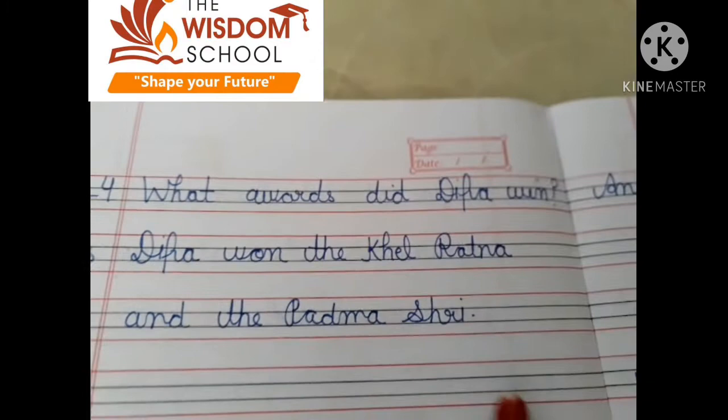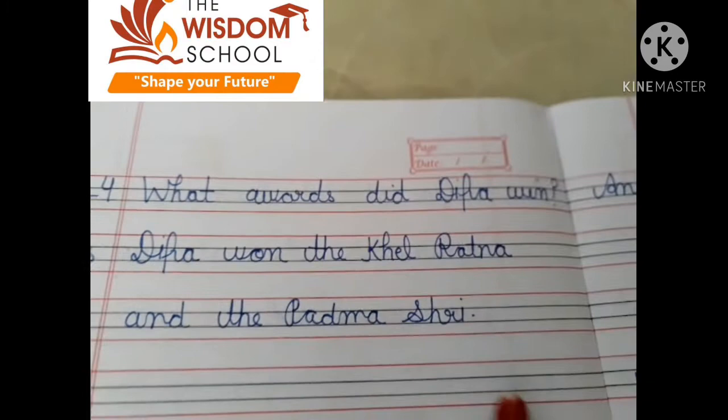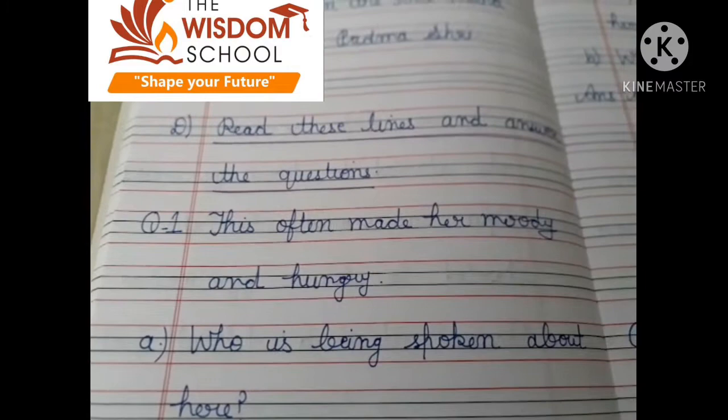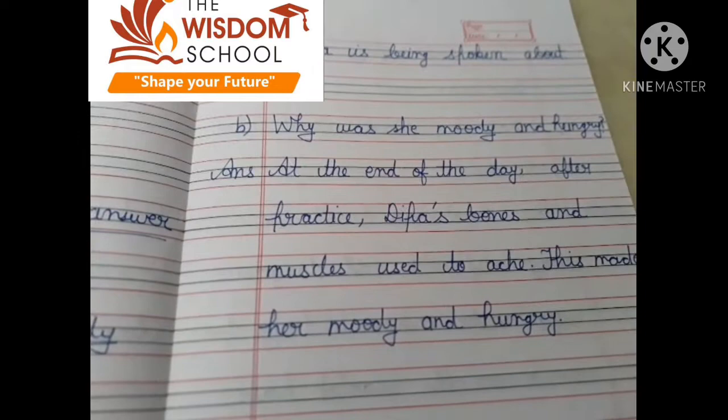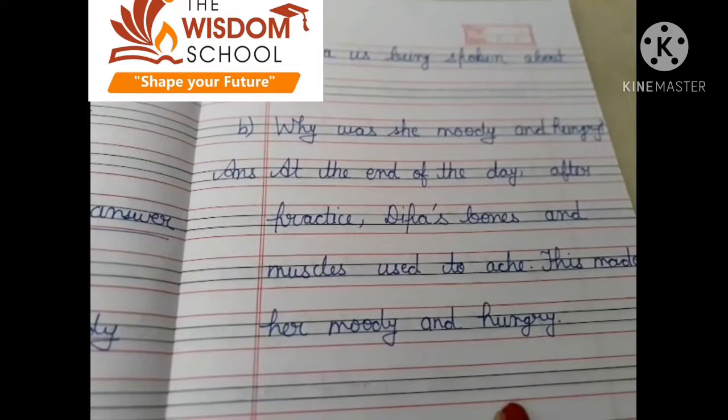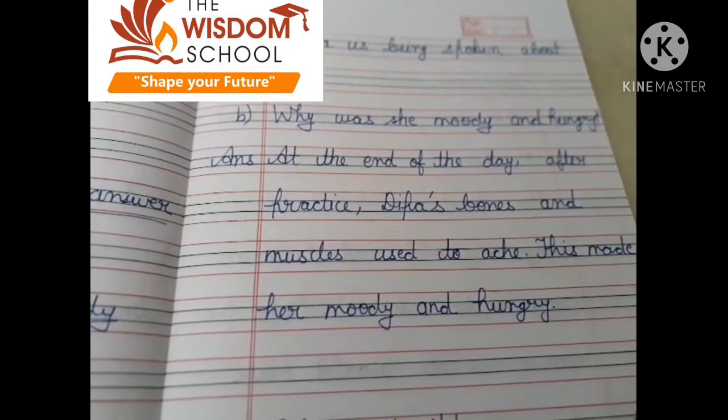What awards did Deepa win? — Deepa ने कौन सा award जीता? Khel Ratna और Padma Shree। Read this line and answer the question: 'This often made her moody and hungry.' — Who is being spoken about here? Deepa के बारे में। Why was she moody and hungry? — At the end of the day after practice, Deepa's bones and muscles used to ache — इससे वो moody और hungry हो जाती थी।